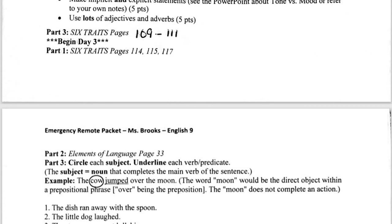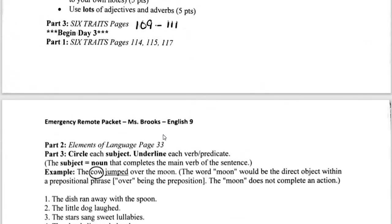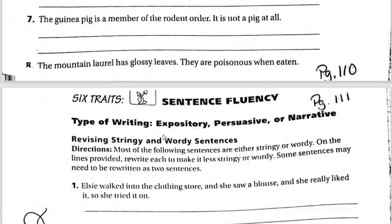Then you've got a new type of worksheet from Elements of Language — those purple books that we use in class, the ones we did the tests in. At the end of day three, after you do your worksheets, you've got five quick questions to answer right here. It's just a review of picking out subject and verb quickly, with an explanation and a few examples.